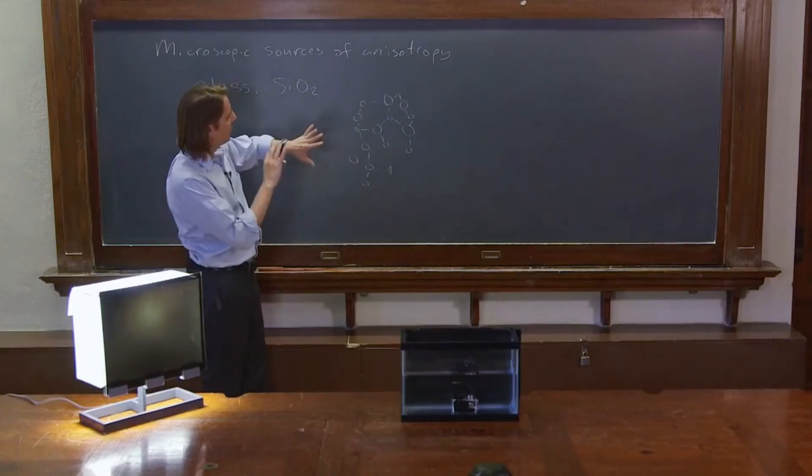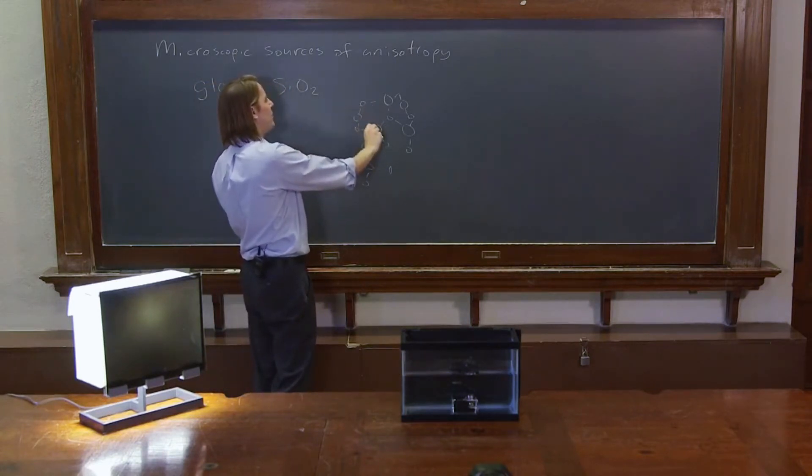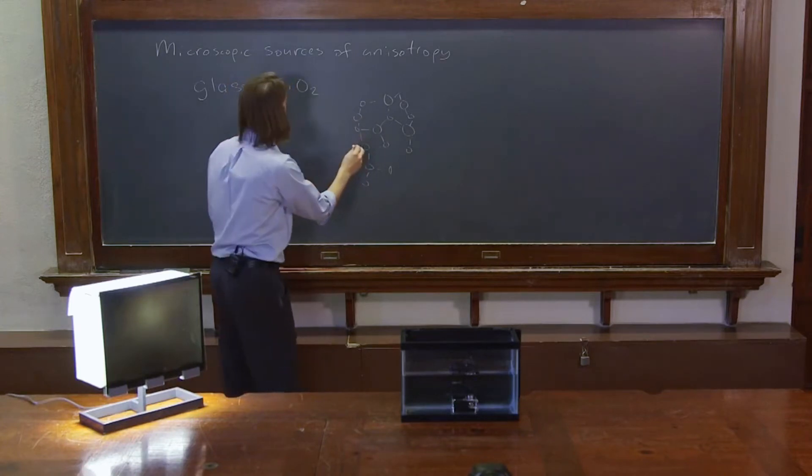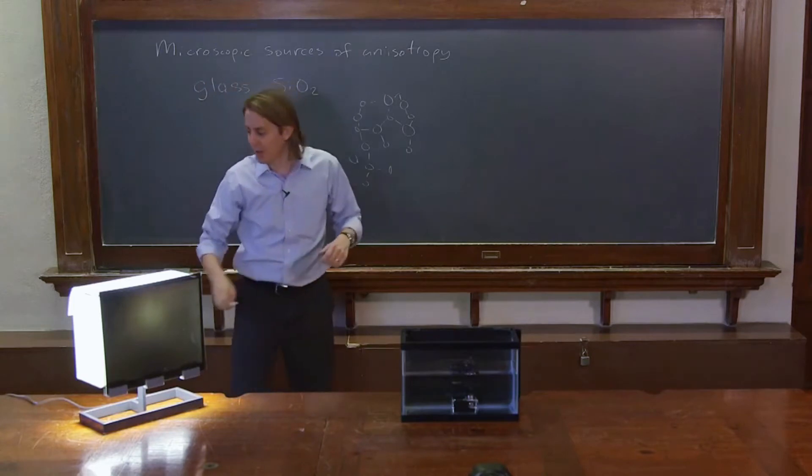So what that means is when light comes in, every direction the E field looks and pushes on electrons basically look the same. So glass is very isotropic. That's one great thing about glass, highly isotropic.